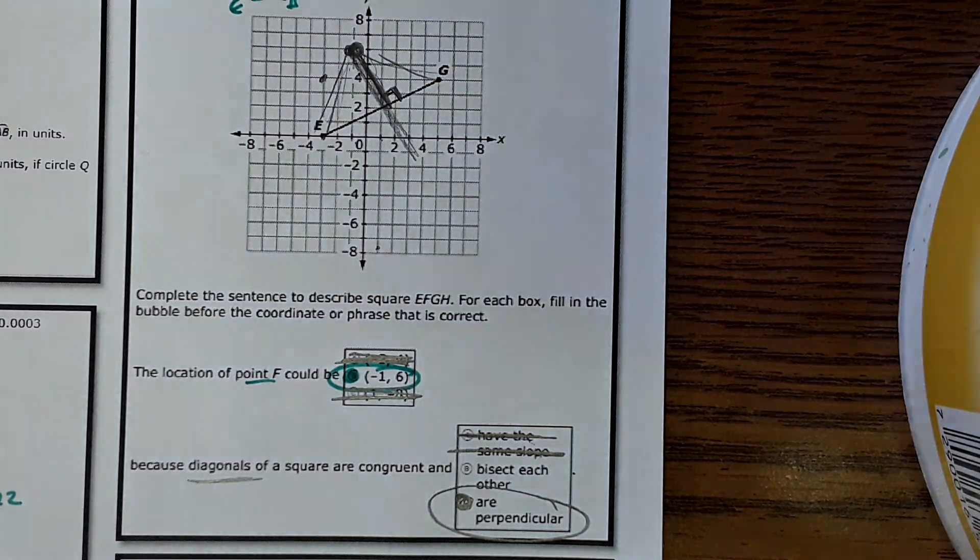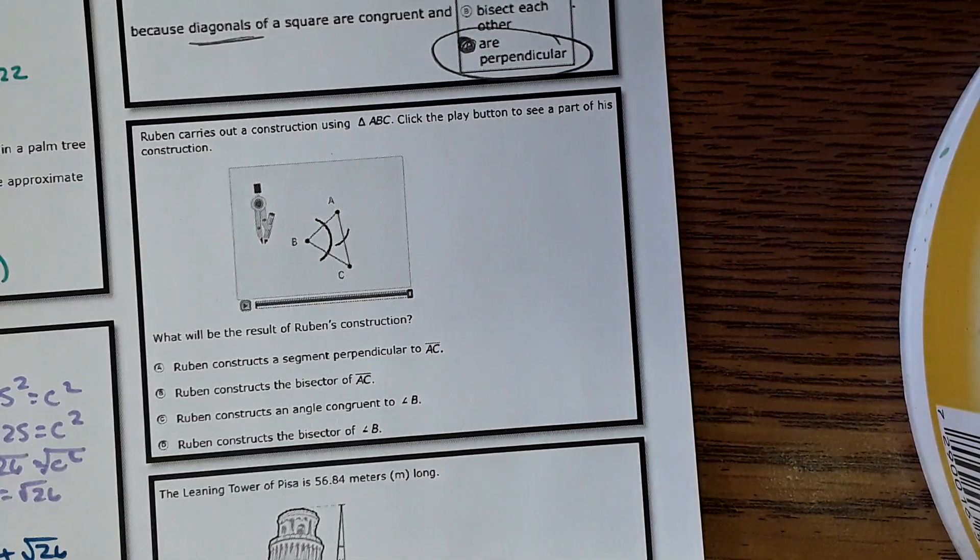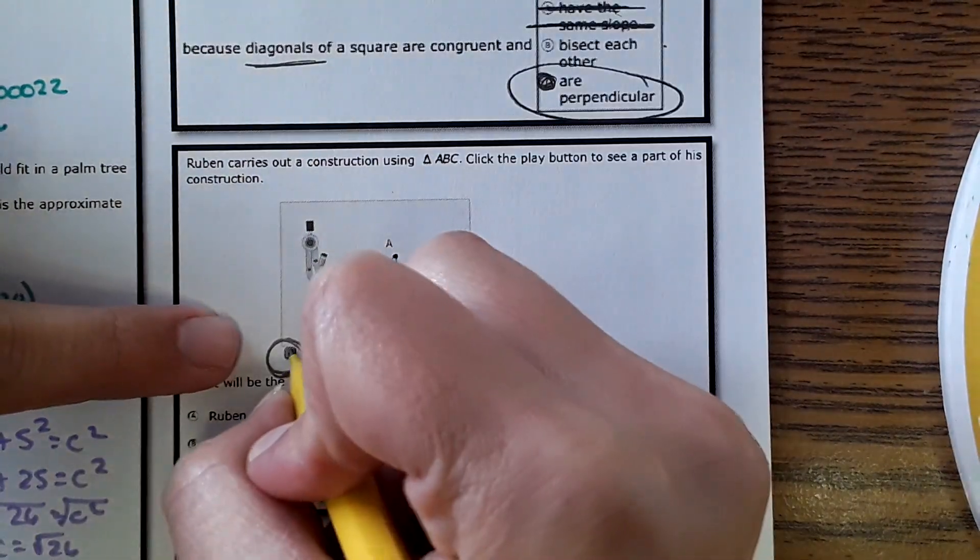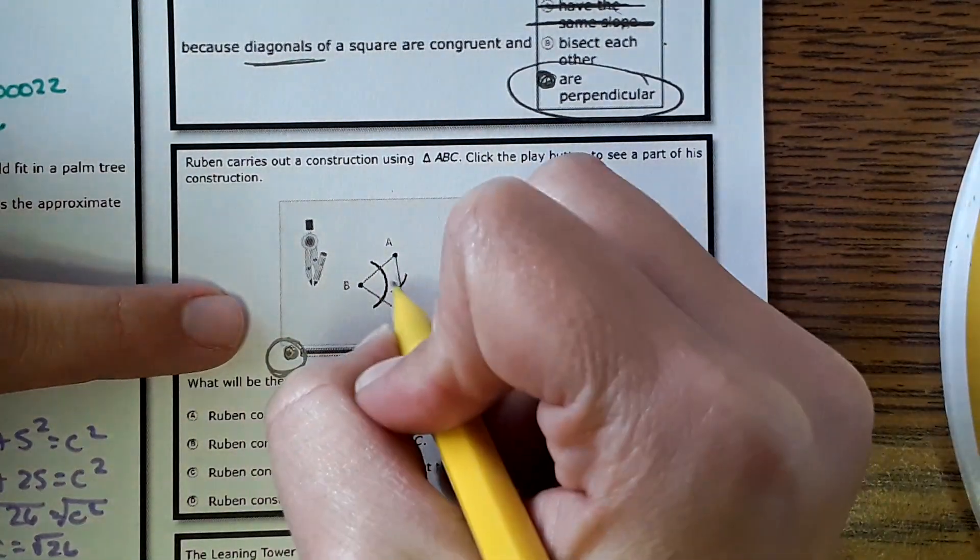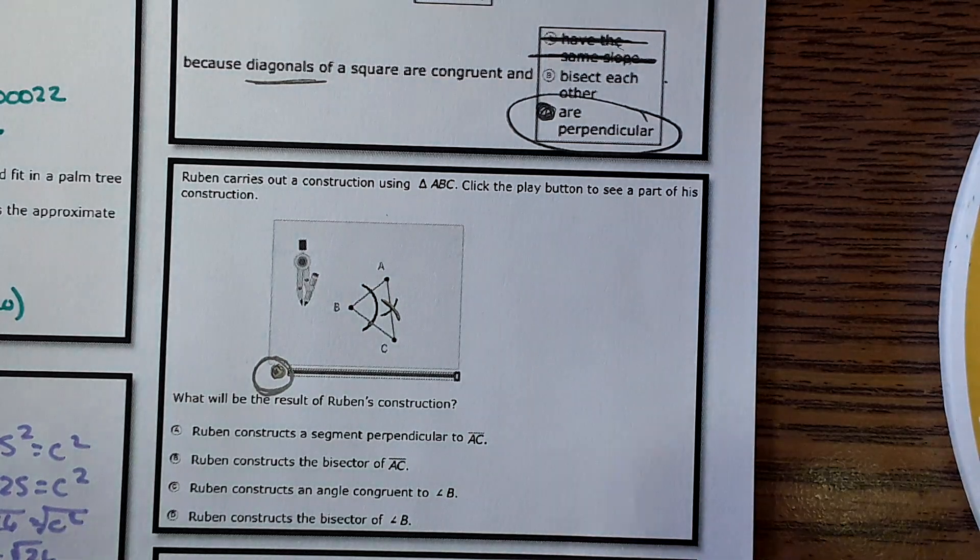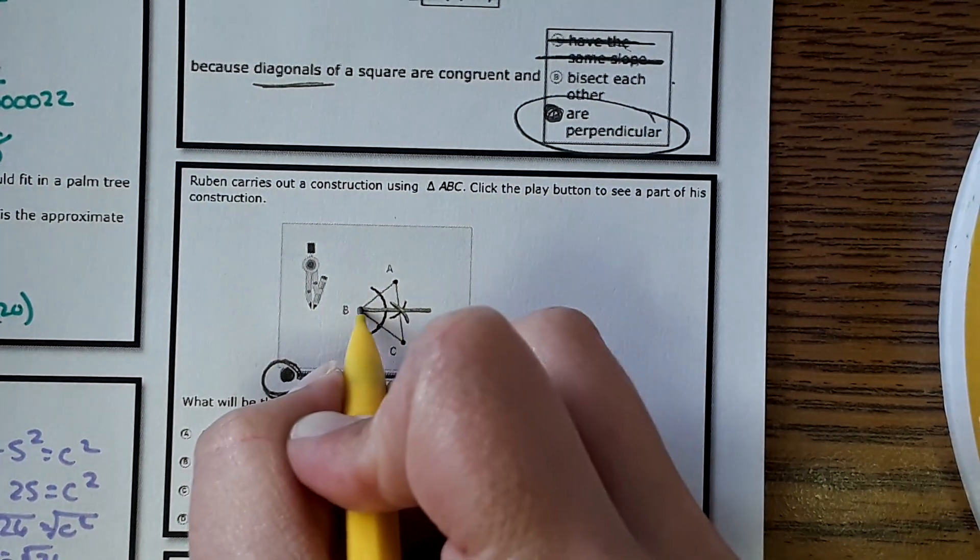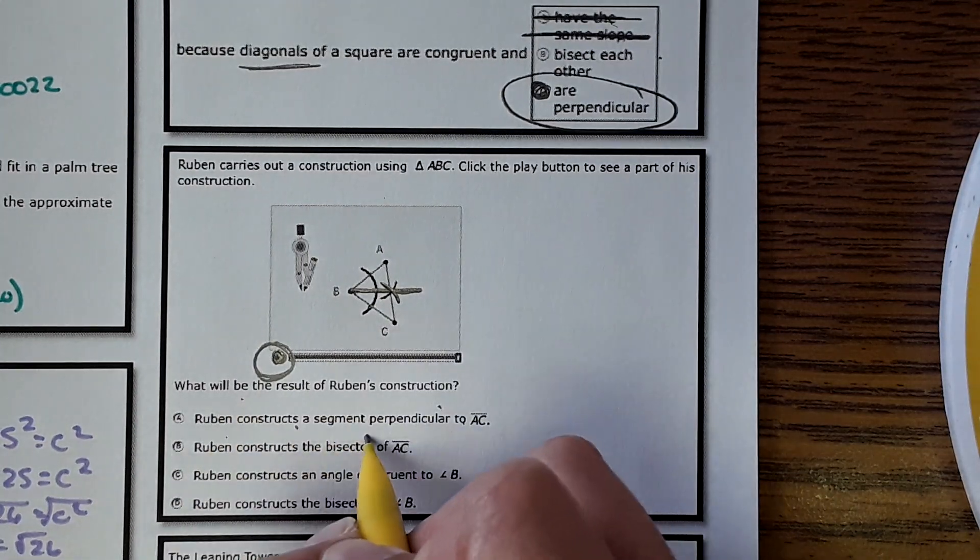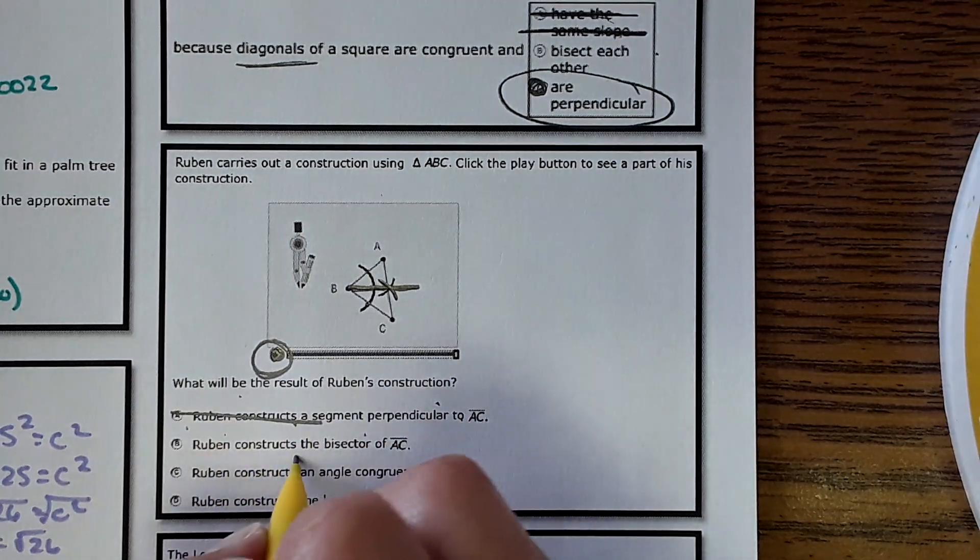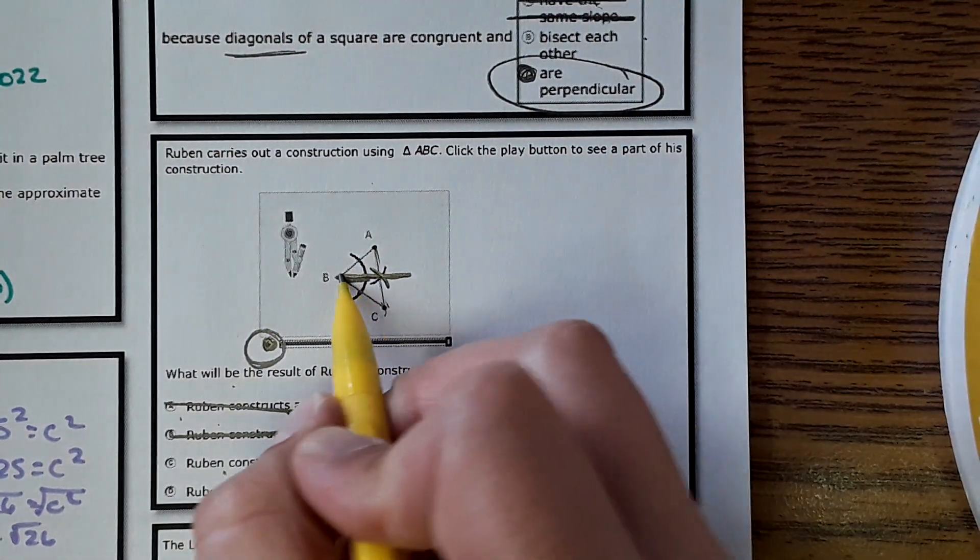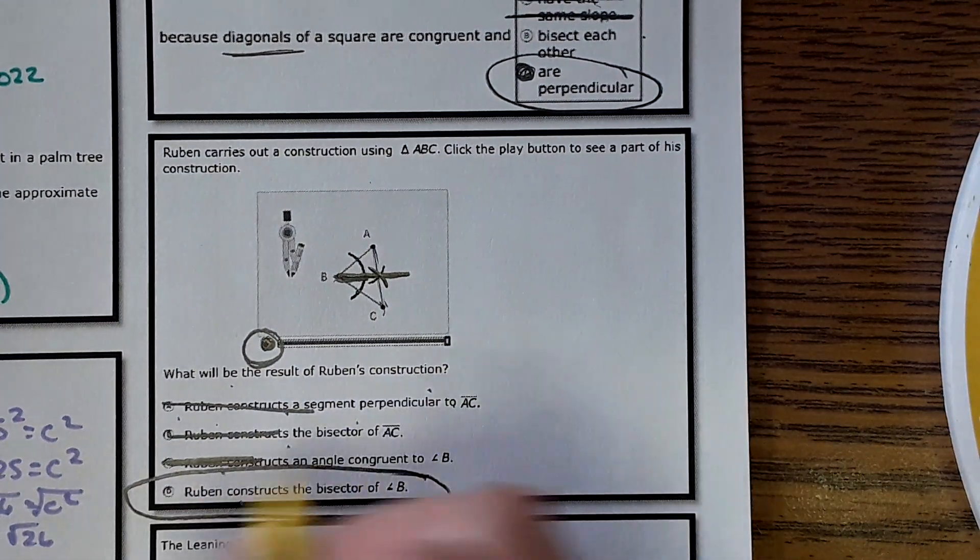Okay, next. Okay, here is a construction one, an example of how they might ask it on the test. This one says, Ruby carries out a construction using triangle ABC. Click the play button to see the part of this construction. So there is a little play button down here. So we're going to pretend to click it. And when we click it, it's going to show a compass, like going right here, and then making a cross like this. Okay. So what are they doing here? Well, then you would connect this, and it would be making an angle bisector for angle B. Rubin constructs a segment. So what will the result be? Segment perpendicular to AC? Maybe, but that's not exactly what we're doing. Constructs the bisector of segment AC? Again, maybe, but we were doing an angle bisector. Angle congruent to angle B? No, we're splitting angle B in half. Constructs the bisector of angle B. Oh, there it is. So, D.